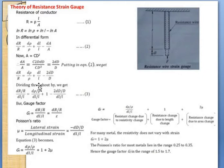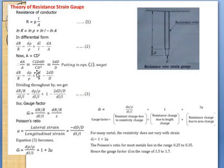The entire equation is now divided by the strain term dL/L. So: (dR/R) / (dL/L) = (dρ/ρ)/(dL/L) + 1 − 2(dD/D)/(dL/L). Dividing through by dL/L gives 1 for the second term on the right-hand side.